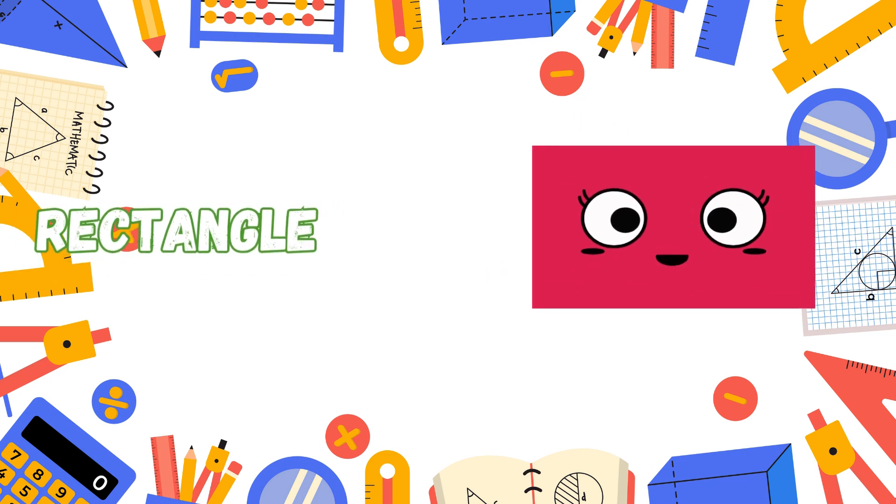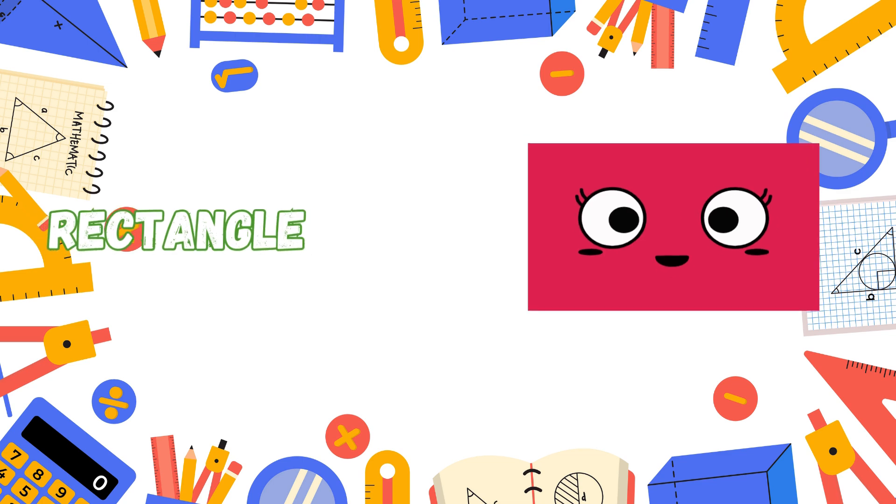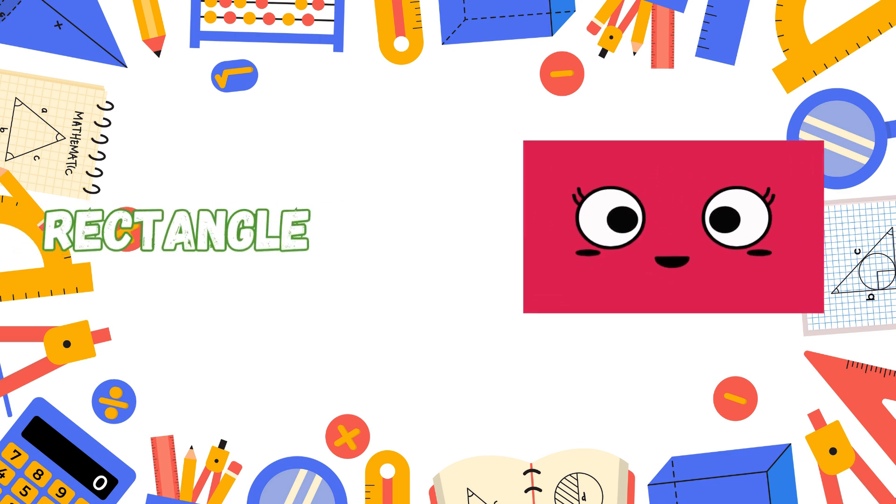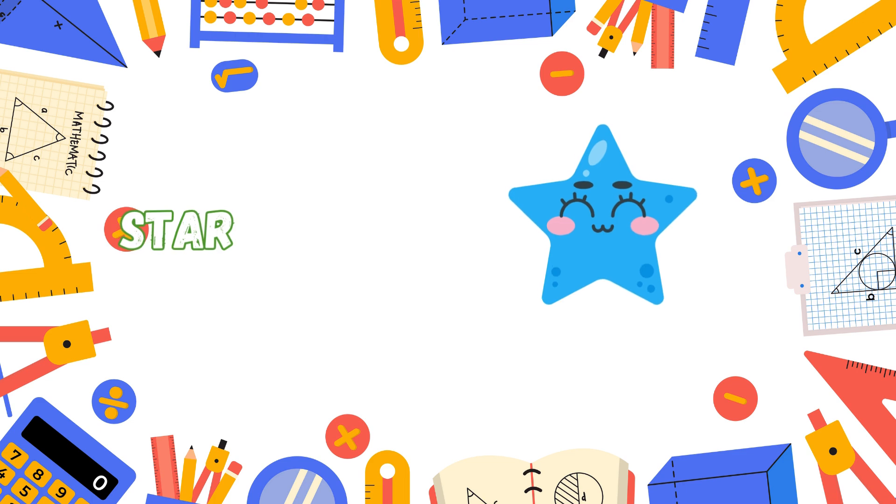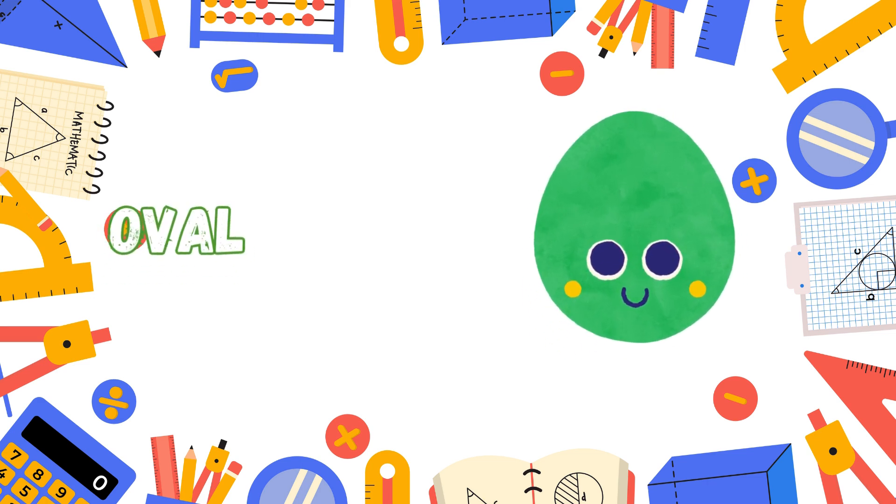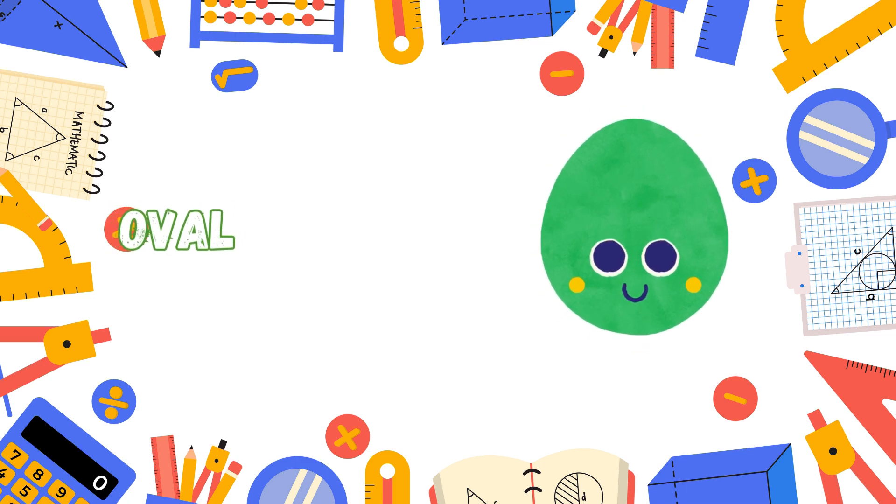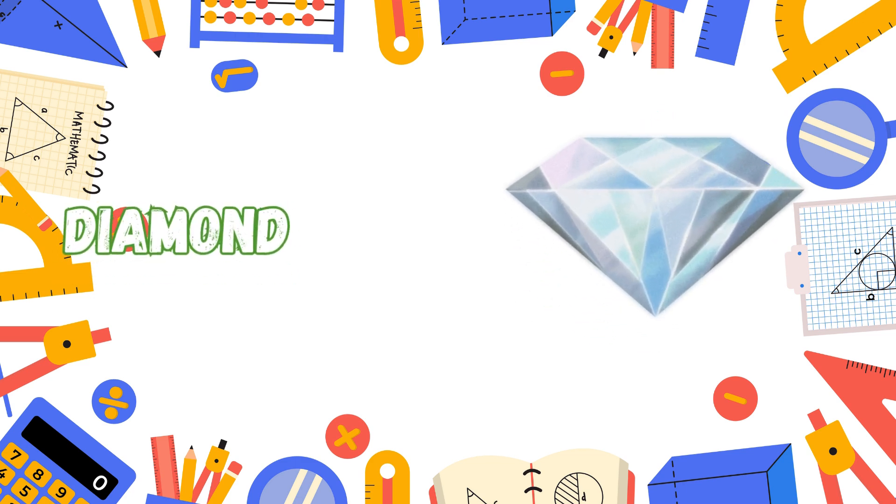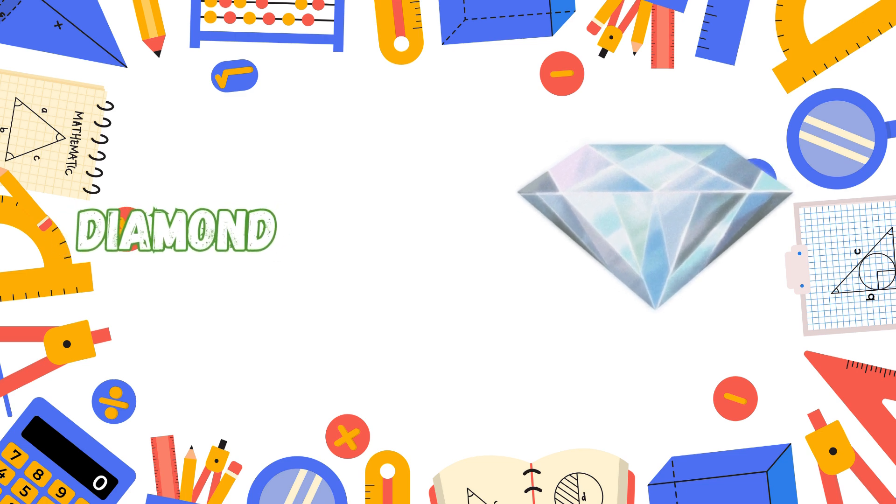Rectangle is long and wide. Two sides short, two stretched in stride. Stars shine bright with many points. In the sky they form great joints. Oval is smooth like an egg, a stretched out circle on its legs. Diamond flies like a kite so high with sharp corners.